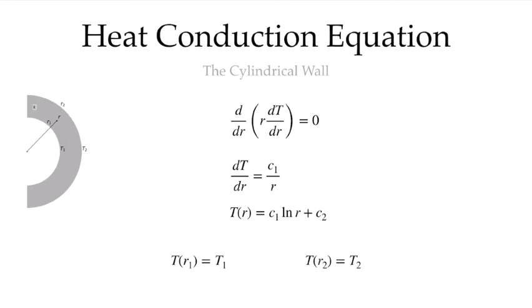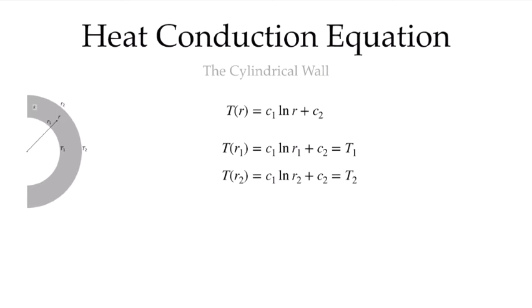We now need our boundary conditions. In this problem, we're going to look at Dirichlet conditions. At radius r1, we'll have a known temperature T1, and at radius r2, we'll have a known temperature T2. We can plug each of these into our general equation to solve for these specific constants.